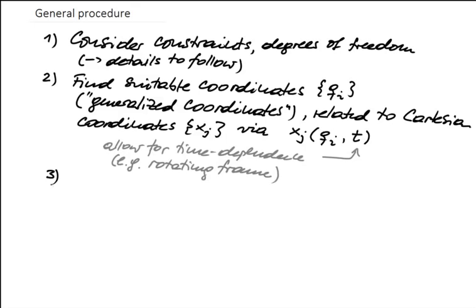As for the notation, the generalized coordinates are usually denoted by Q, and the X_i are usually reserved for Cartesian coordinates.